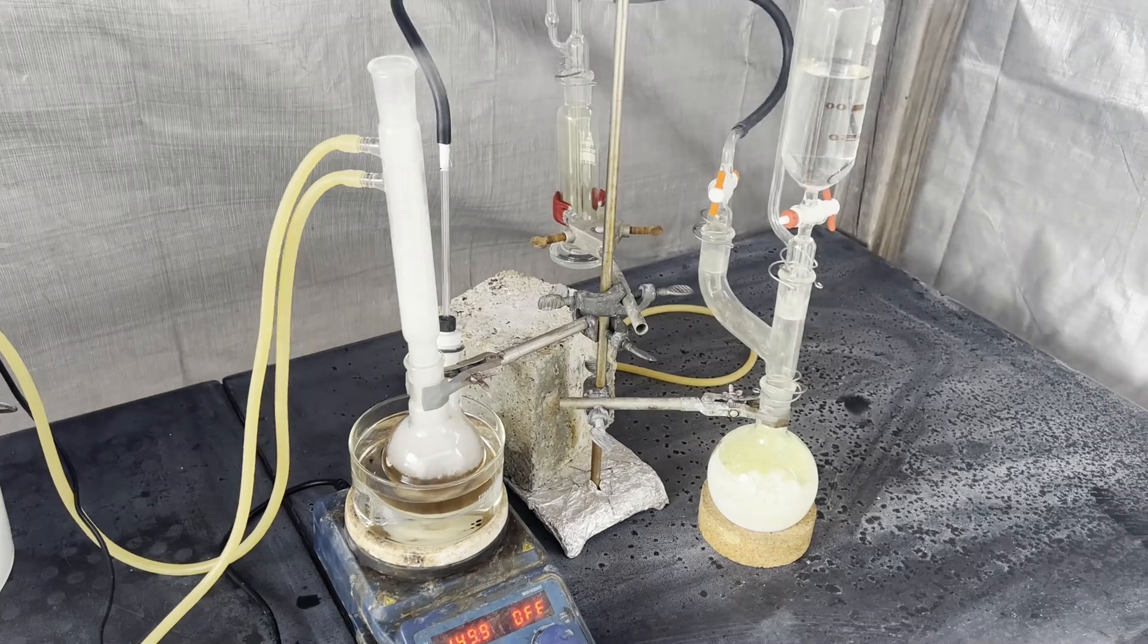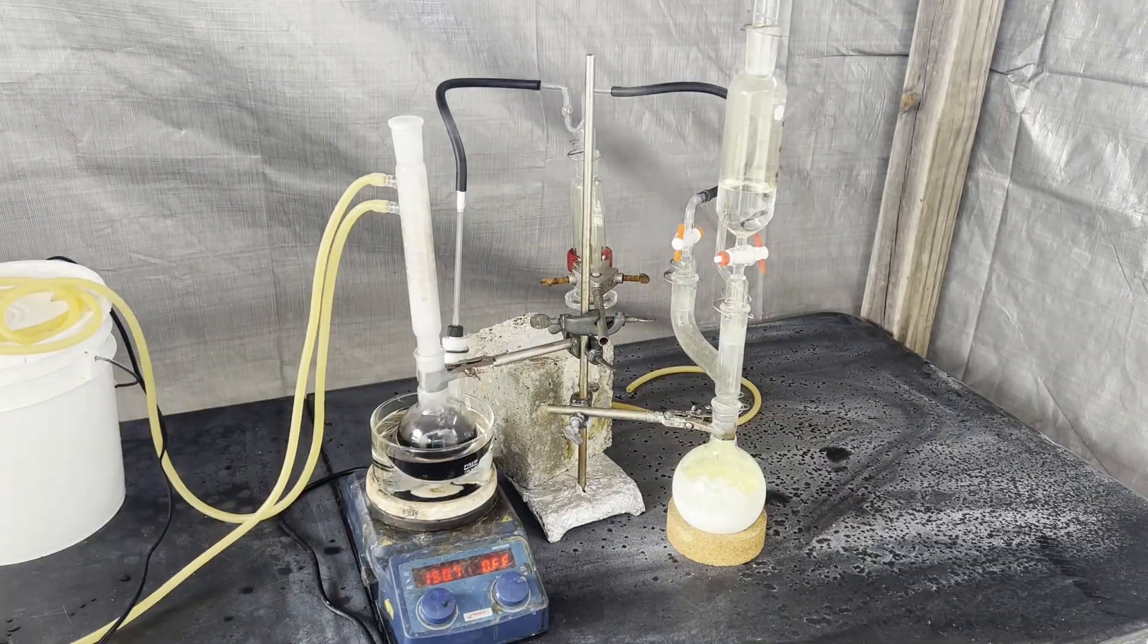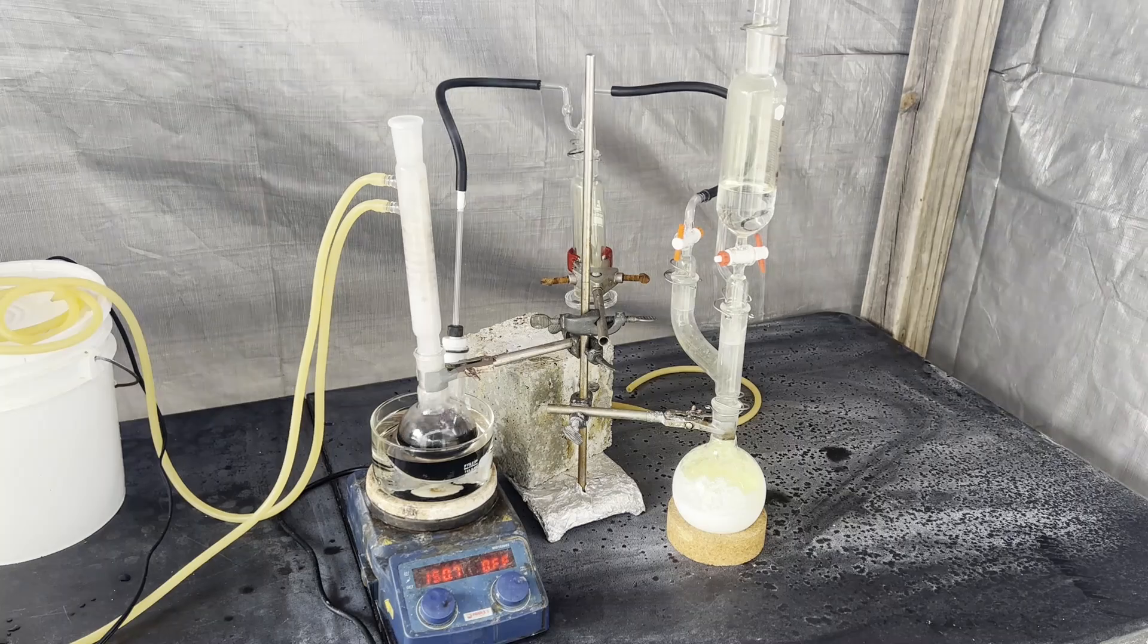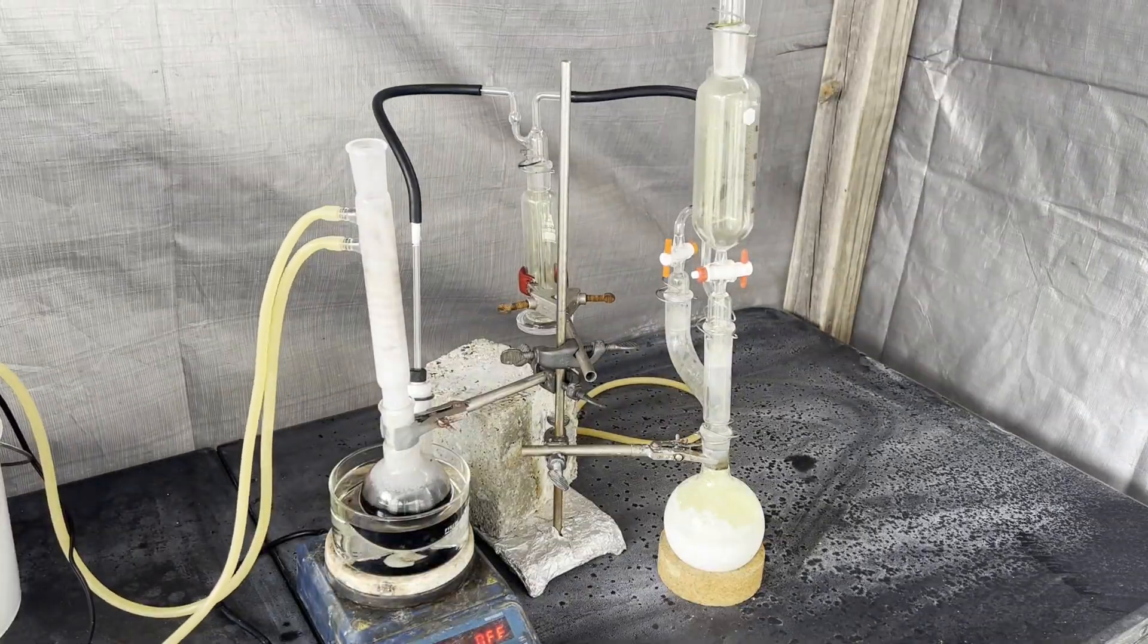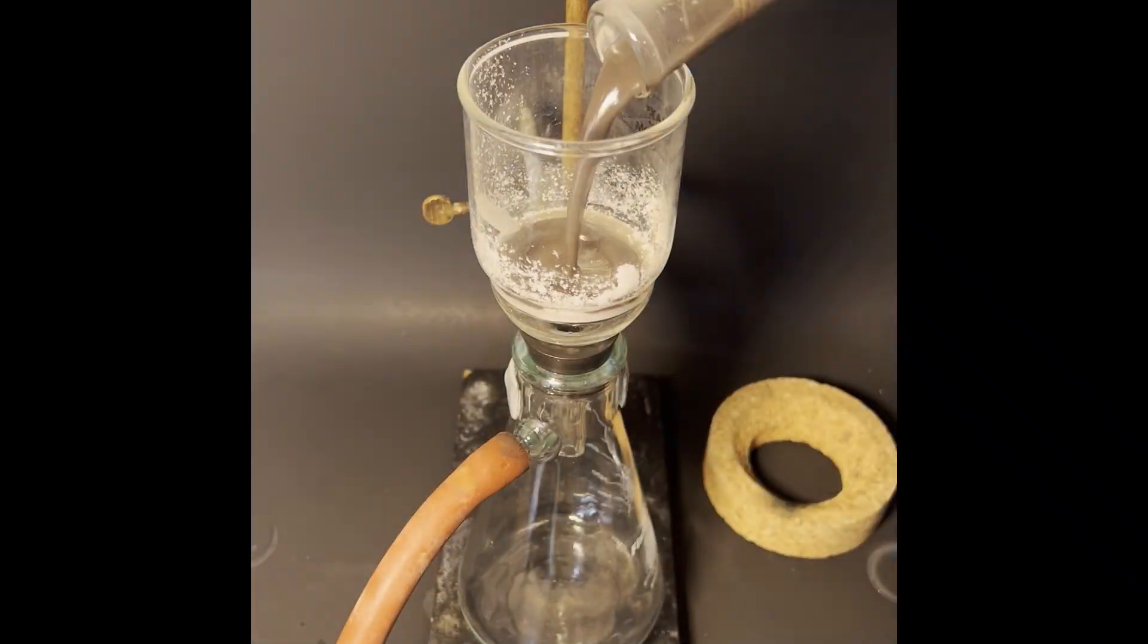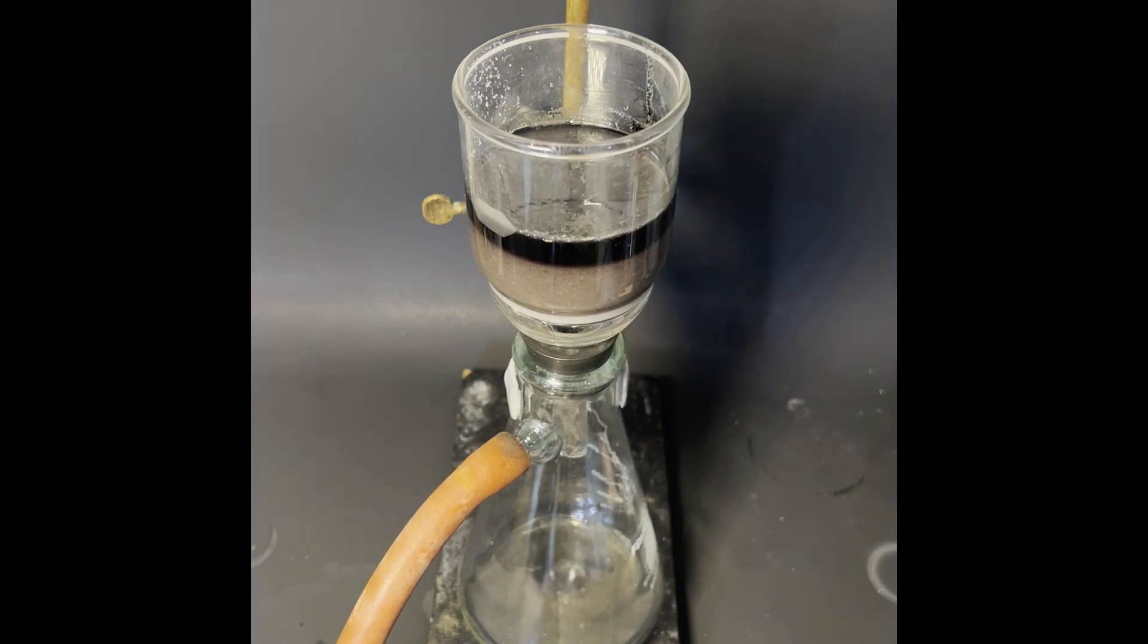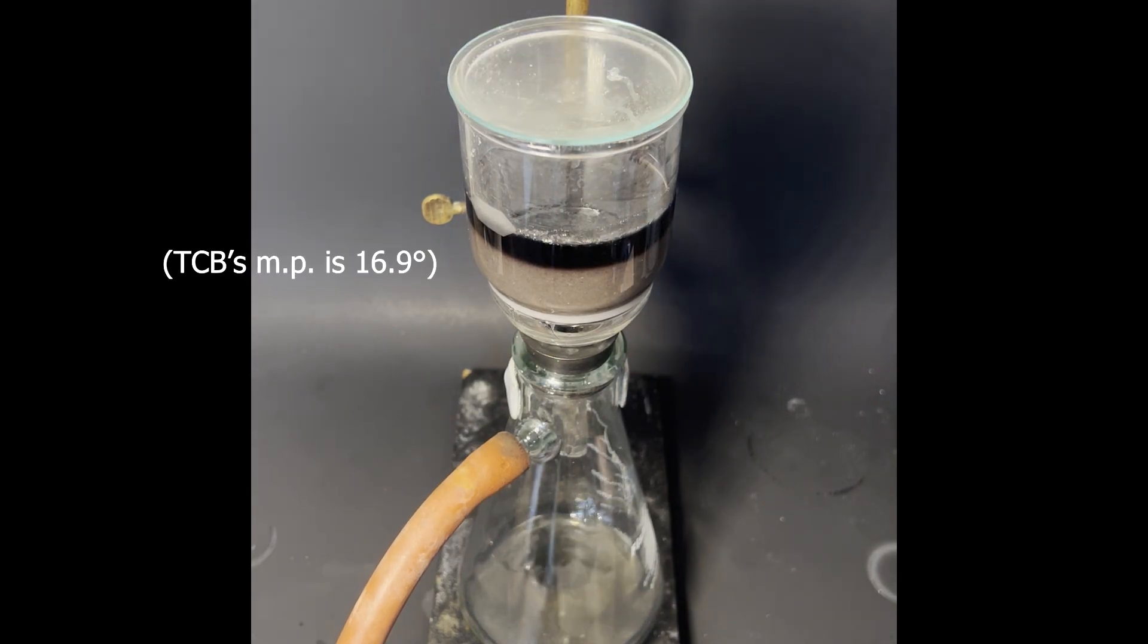I remedied the gas washing bottle suckback problem by filling it just under the tube inlet with the concentrated sulfuric acid. This didn't seem to have a significant effect on the drying of the chlorine as far as I can tell, but I don't know for sure. Afterwards, I vacuum filtered the reaction mixture to remove any of the insoluble aluminum chloride and PDCB. TCB is a liquid at room temperature, so it passes through the filter.